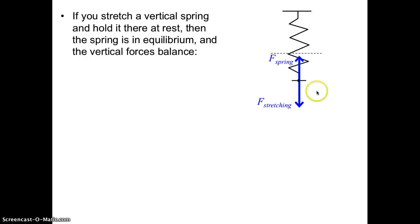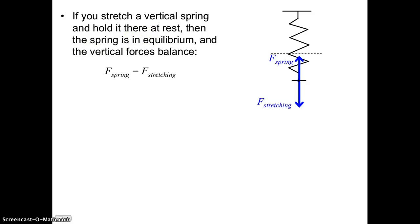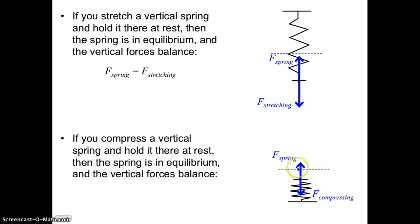We can do this with vertical springs as well. Here's the relaxed position. If we pull the spring down, there's some stretching force pulling it down; that generates an opposing spring force. If the spring is held at rest, it's in equilibrium and the two forces balance. Similarly, if we compress a vertical spring downward with a downward force, that generates an opposing spring force. If we hold it at rest, the vertical forces are balanced because the spring is in equilibrium, so the spring force equals and balances the compressing force — they balance to give a net of zero.